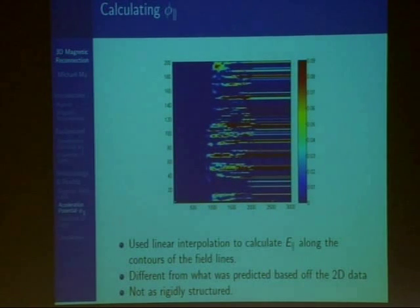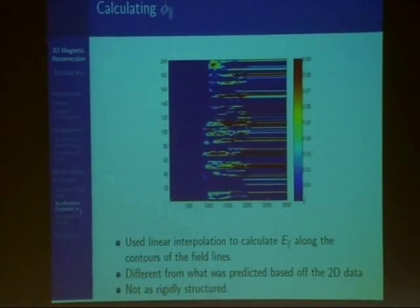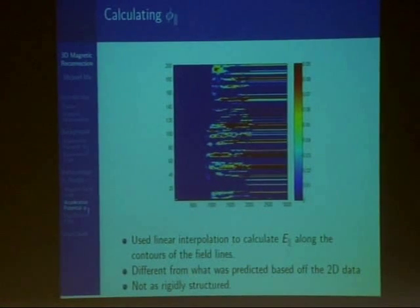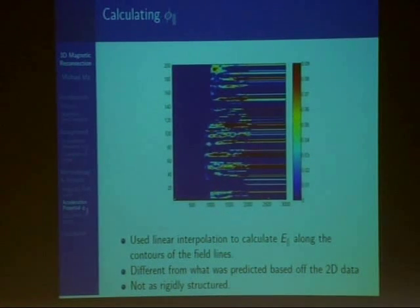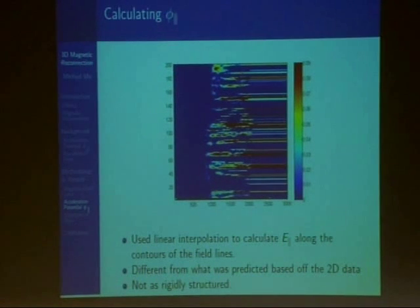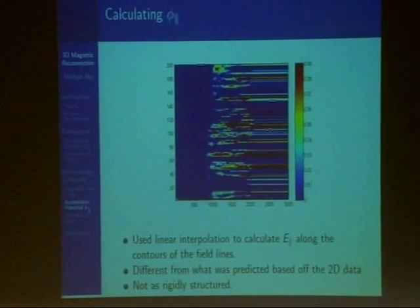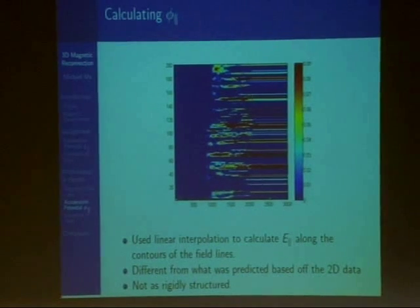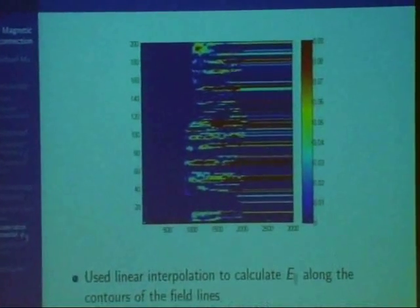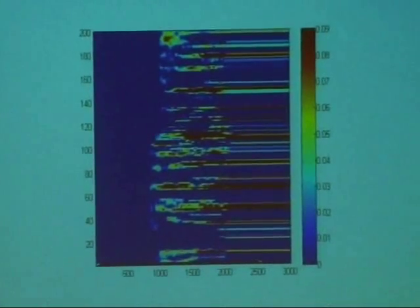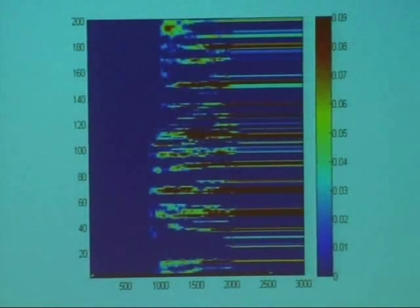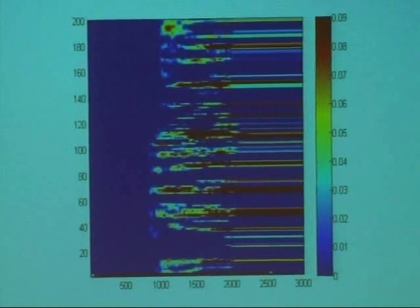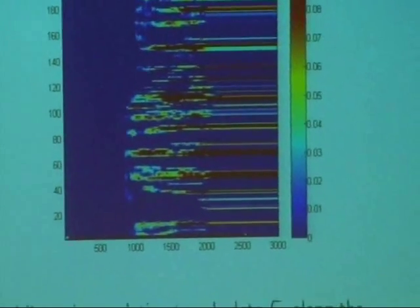Using interpolation, we were able to calculate the component of electric field parallel to the contours of the magnetic field lines. When we integrated this value, we were able to obtain phi-parallel. Phi-parallel is shown graphically here, and the colors represent the magnitude. It was actually really different from what we expected. Because from the 2D data, we expected that phi-parallel would turn out to be uniformly zero. As you see here, that's clearly not the case.